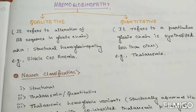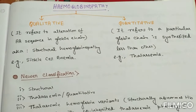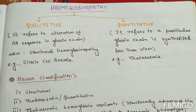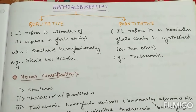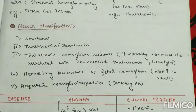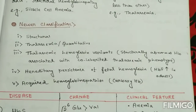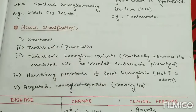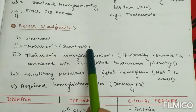In sickle cell anemia, in the beta globin chain, the sixth position glutamate is replaced by valine. The quantitative hemoglobinopathy classical example is thalassemia. We will discuss it in detail. In the newer classification, hemoglobinopathy can be classified as structural hemoglobinopathy or thalassemia, i.e., quantitative hemoglobinopathy.